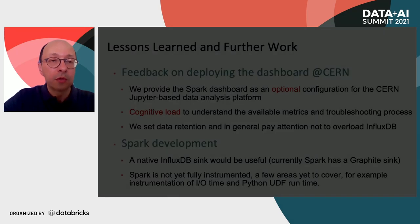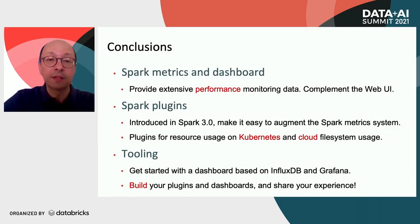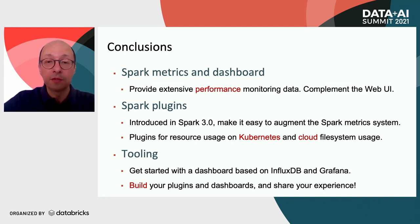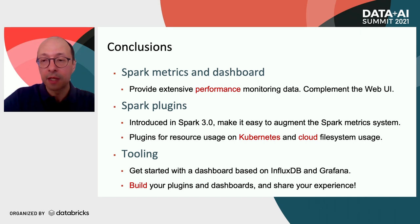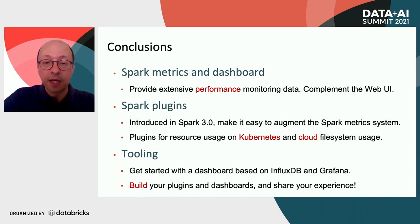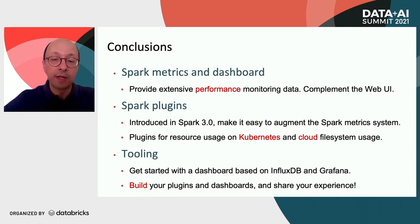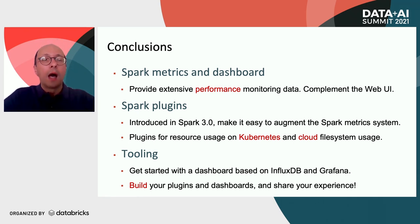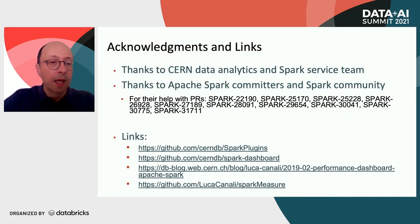In conclusions: Spark metrics and the dashboard provide extensive performance monitoring data and are a nice complement to the web UI when doing performance troubleshooting. Spark plugins, introduced in Spark 3.0, make it easy to augment the Spark metrics system — for example, we have seen plugins to monitor Spark on Kubernetes and cloud file systems. You can get started building and using a Spark performance dashboard based on InfluxDB and Grafana with the tooling shown in this presentation and the demo. I hope this motivates you to build your own plugins and dashboards and also share your experience. Thank you all for your attention.